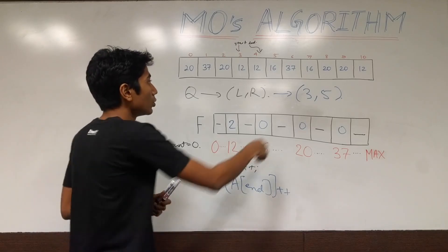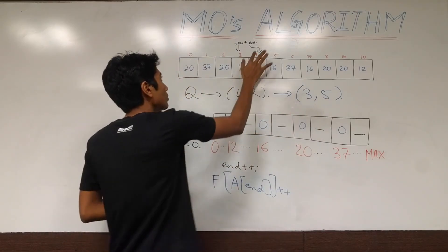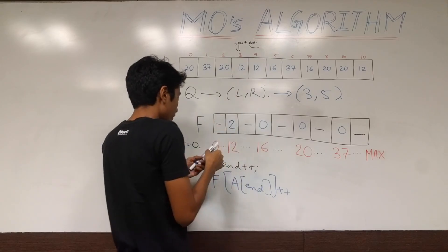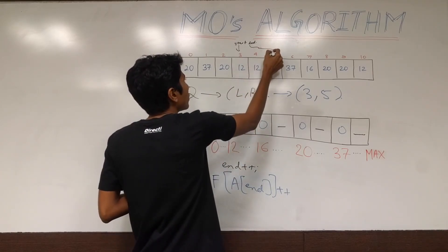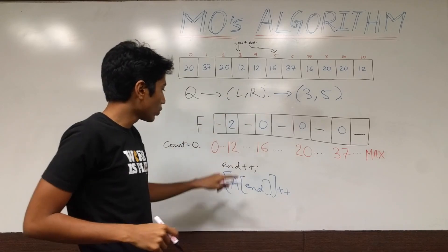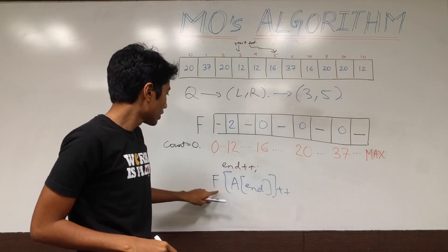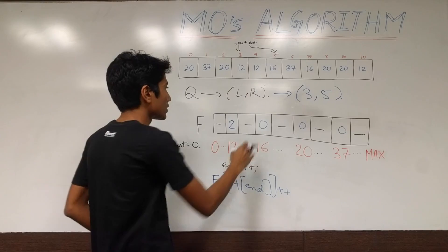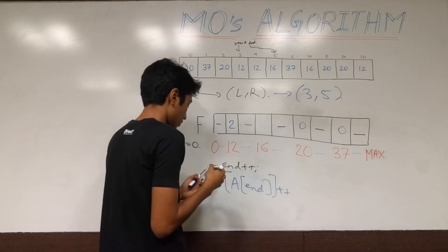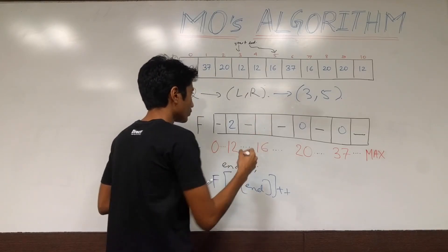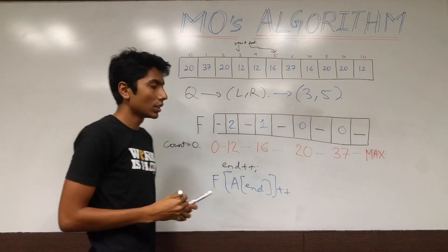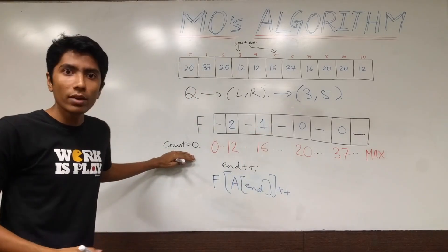Now end is still not equal to R1. So increment end to 5. 16 is the element over there. So end got incremented. f of 16 plus plus tells us that we have this one here. Now, why did we have this variable count?